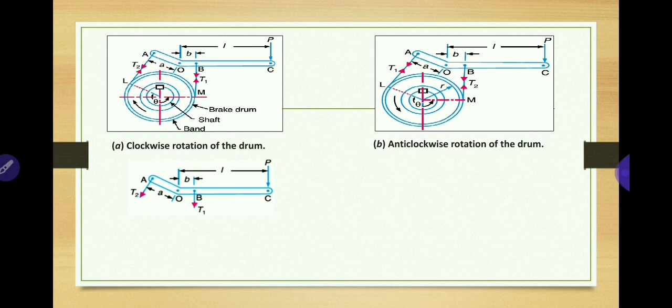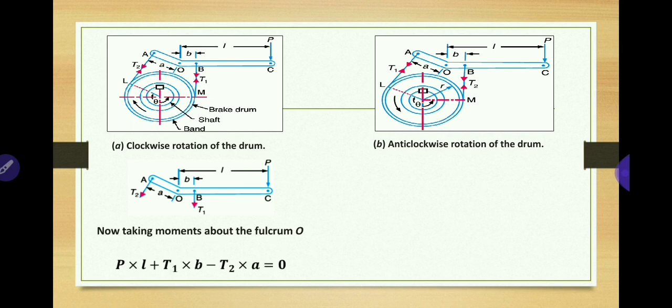To take moments, you can use a free body diagram. Here, equating anticlockwise couples to clockwise couples: P into L creates one clockwise couple at the fulcrum, and T1 into B distance also creates a clockwise couple. These two are added and equated to the anticlockwise couple created by T2 into A. So the equation becomes: P into L plus T1 into B equals T2 into A. You take this moment at fulcrum point O.